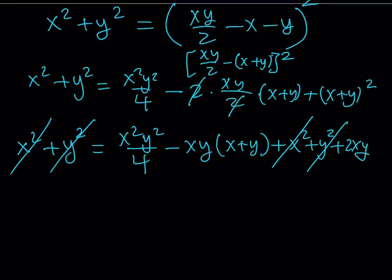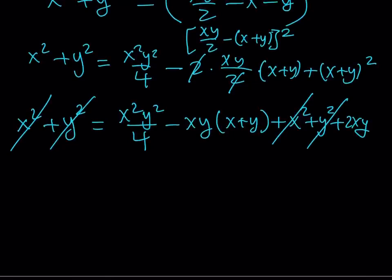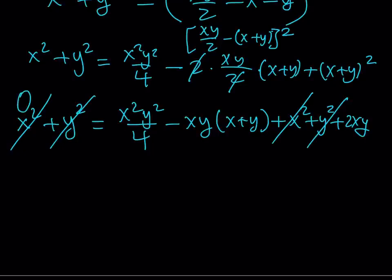So x² + y² = x²y²/4 - xy(x + y), and then I'm going to expand the square: x² + y² + 2xy. You don't have to write it this way, but I find it more convenient. These two terms are going to cancel out from each side. Let me write it first, and then I'll multiply by four, so I'm not skipping steps.